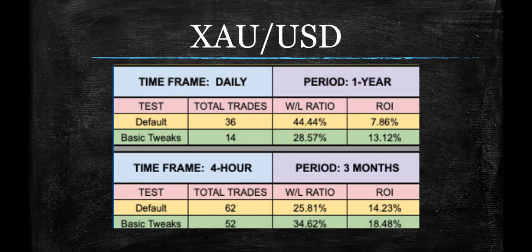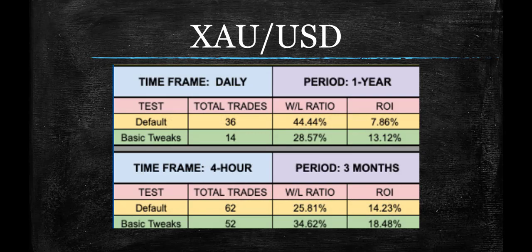Moving on to gold — actually pretty good on its own. I like indicators that are good in their default state, and for gold in particular, this one is. You did see improvements when the tweaks were made. We'll see in a moment — I have all the links to where you can go see what those tweaks actually were down below.